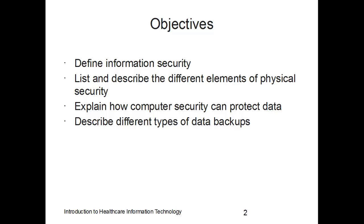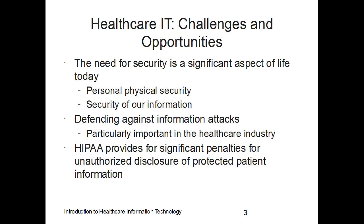Some objectives for this chapter: define information security, list and describe the different elements of physical security, explain how computer security can protect data, and describe different types of data backups.